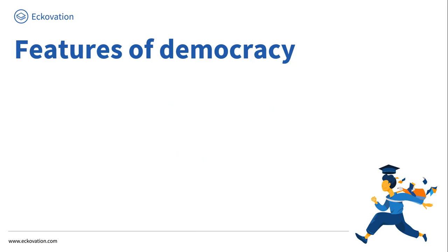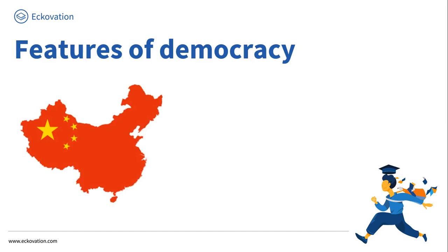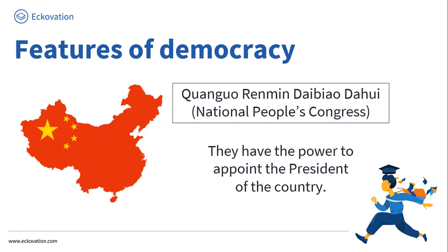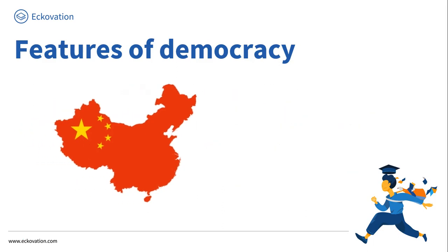Now the second feature — let's look at the example of China. China holds elections every five years and a parliament is elected called the Quanguo Renmin Daibiao Dahui, translated in English as the National People's Congress. This parliament has the power to appoint the president. However, candidates must be approved by the Chinese Communist Party, and only members of the Communist Party or eight small allied parties can participate. The government is always the Communist Party.